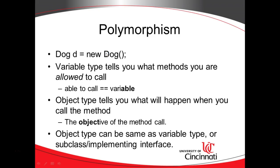Now, the variable and the object type in this example happen to be the same, but in object-oriented programming, that doesn't always have to be the case. As a matter of fact, in some cases it's to our advantage that they are not the same. So here's polymorphism in just a couple of sentences.